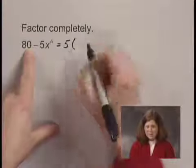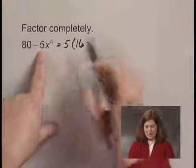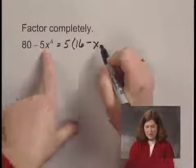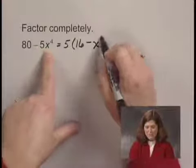5 times 16 is 80, minus, and then 5 times x to the 4th would be 5x to the 4th.